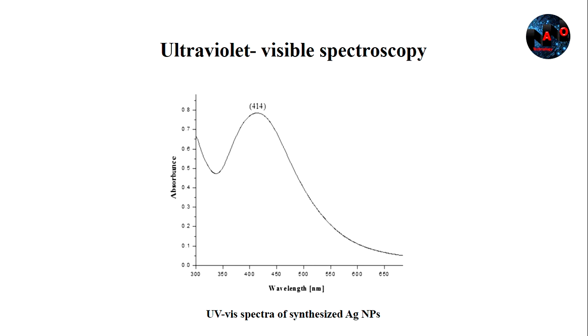In the ultraviolet visible spectrum of silver nanoparticles, a single strong and broad surface plasmon resonance or SPR peak was observed at 414 nanometers that confirmed the synthesis of silver nanoparticles.